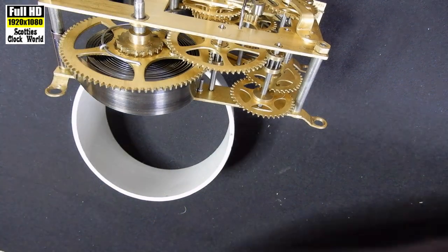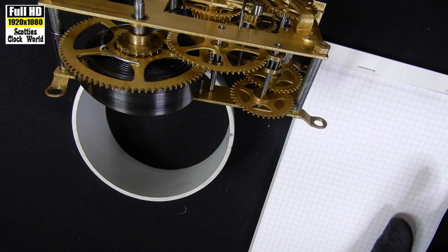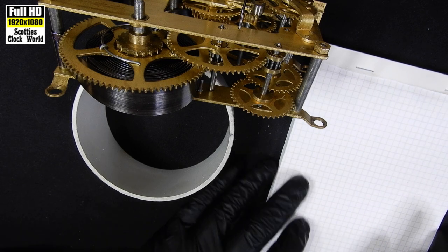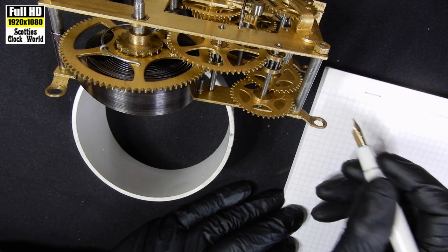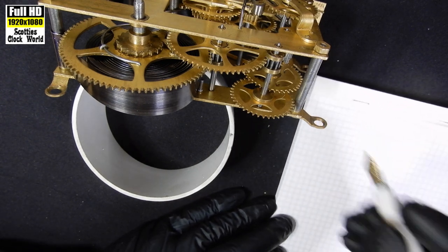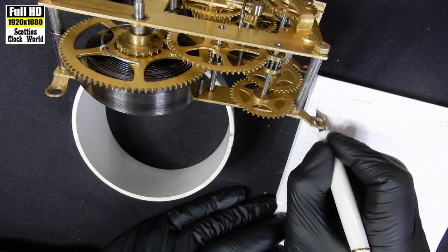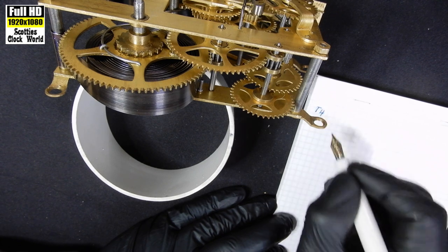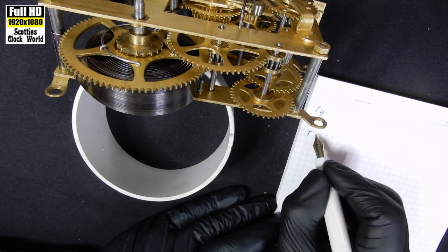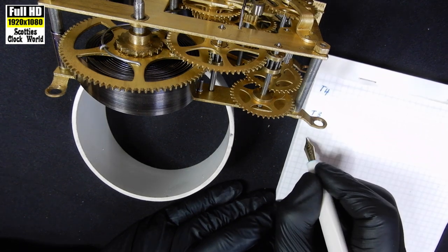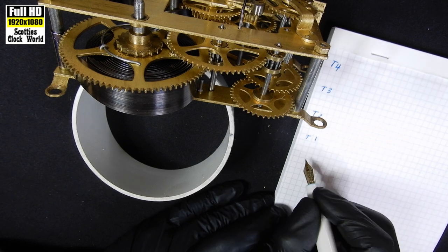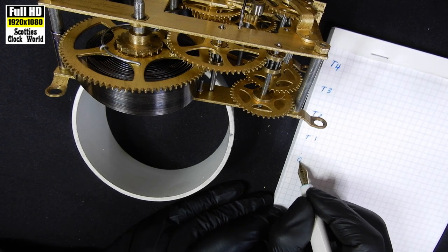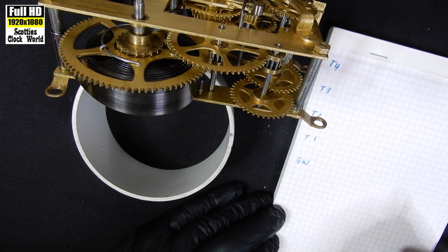Now there's a way to record this information for you later on. So we've got four wheels, including the great wheel. So I shall write down T4, T3, T2, T1, and the great wheel.